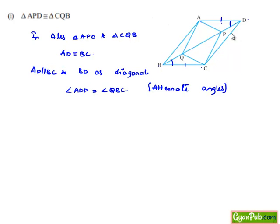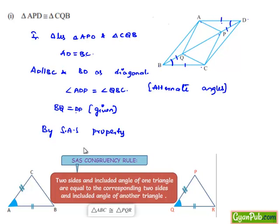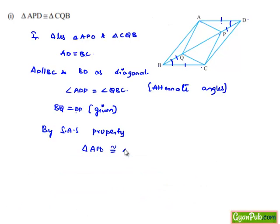The alternate interior angles above the transversal are equal, so angle ADP is equal to angle QBC. It has already been given that BQ is equal to DP. Observing both triangles, two corresponding sides and the included angle between them are equal. So by the SAS property, both triangles are congruent — that is, triangle APD is congruent to triangle CQB.